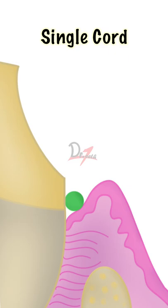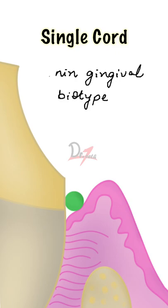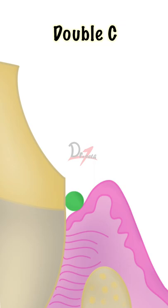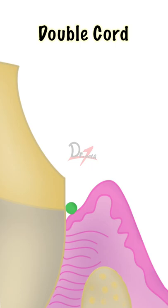Now in what cases can we use just a single cord? These are those patients who have a thin gingival biotype. Other indication of single cord is the patient who has shallow sulcus.